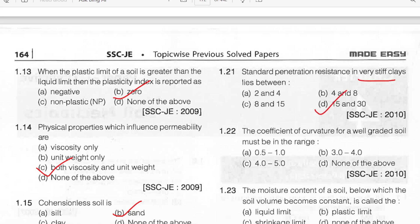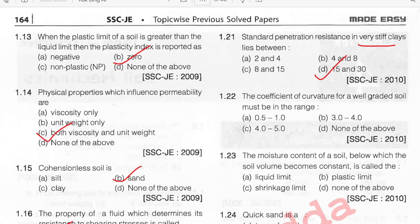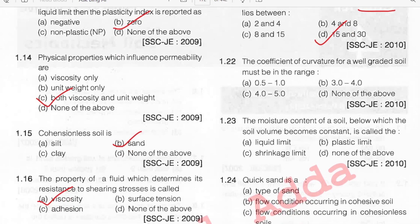The coefficient of curvature of a well-graded soil must be in the range of — checking the range for Cc: it should be between 1 and 3. Since none of the given options match this range exactly, the answer is none of the above.